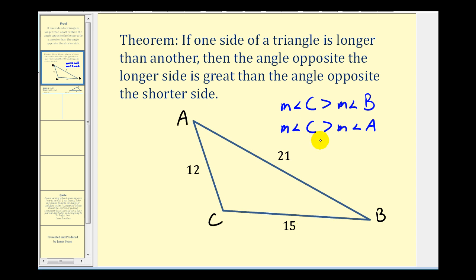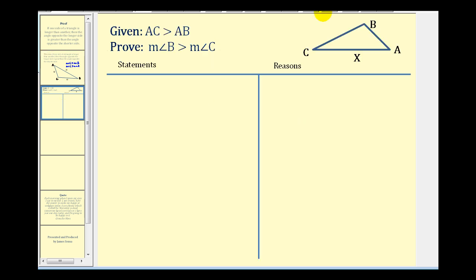Let's see if we can prove this theorem. So we're given that the length of AC is greater than the length of AB. We want to prove that the measure of angle B is greater than the measure of angle C. This is kind of a tricky proof. What we're going to have to do here is pick a point X on side AC to make triangle ABX an isosceles triangle.